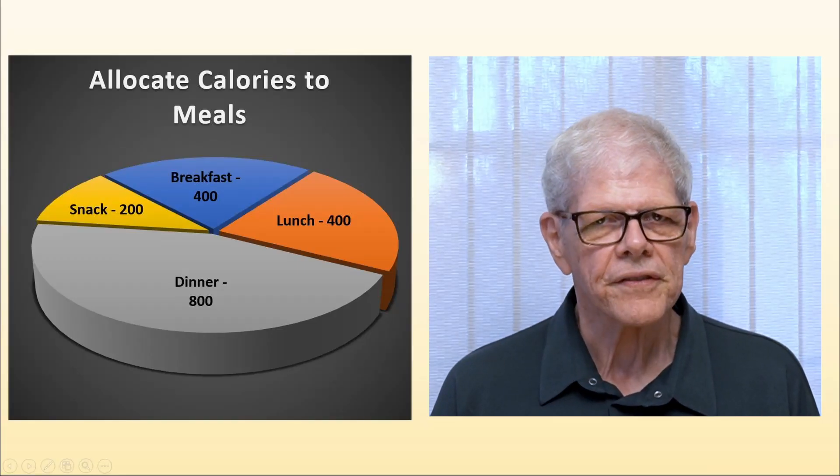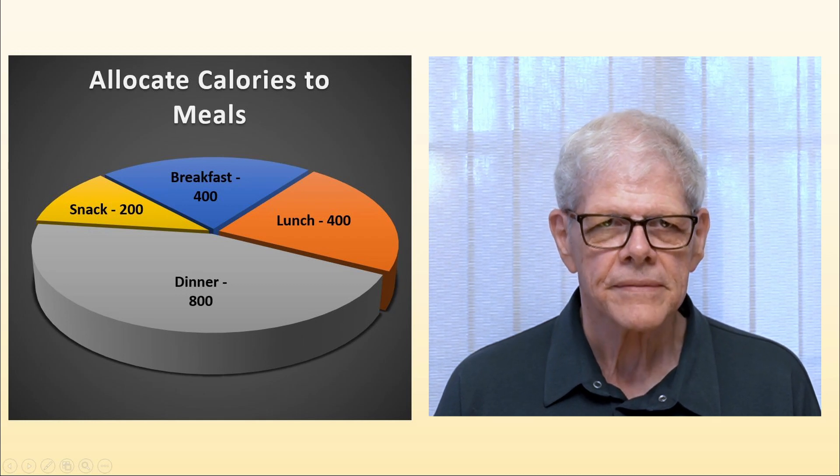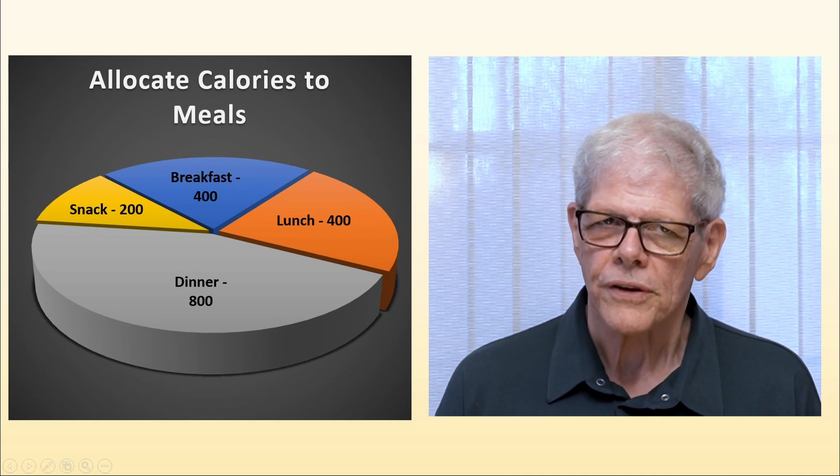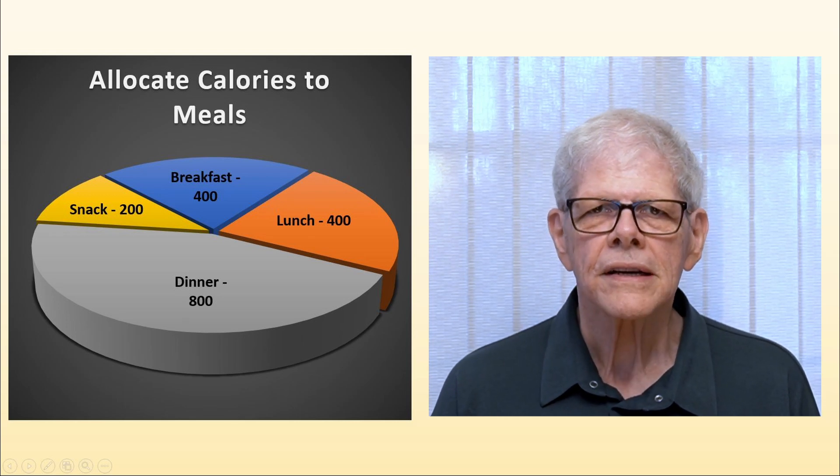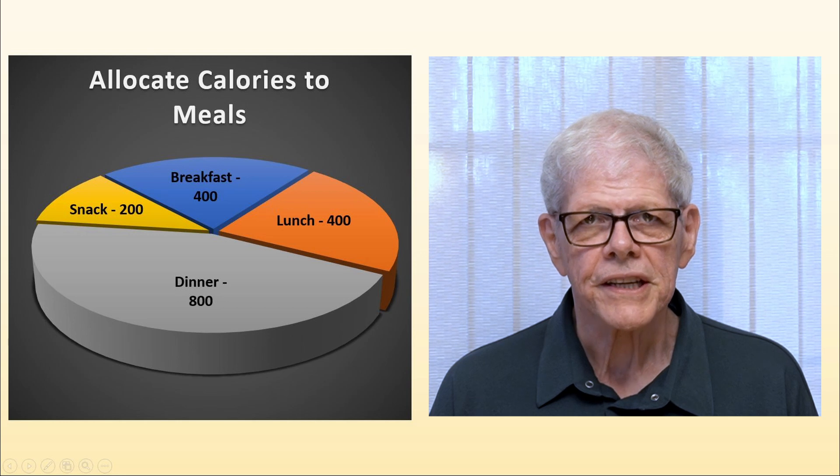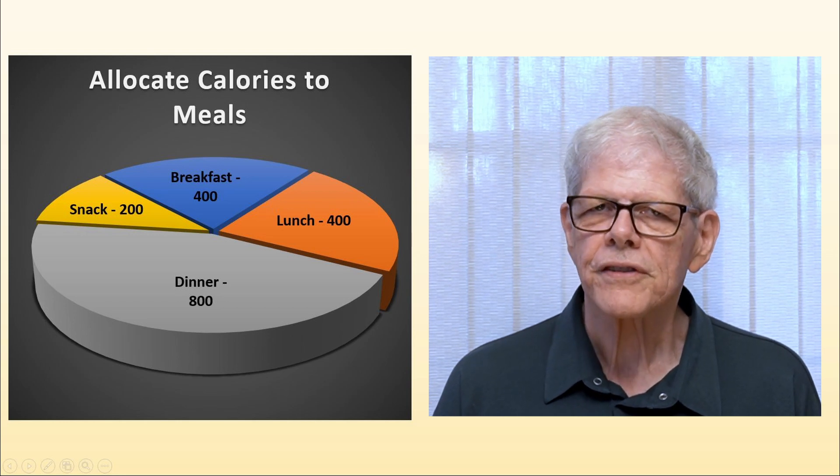I currently allow myself 1,800 calories a day and I allocate them as follows: 400 calories for breakfast, 400 calories for lunch, 800 calories for dinner, and 200 calories for my evening snack.